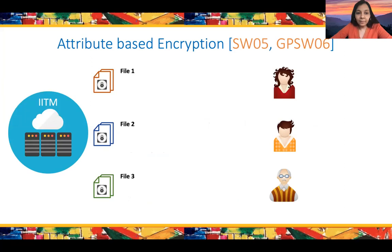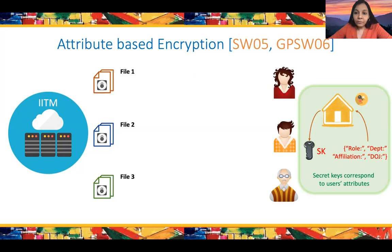Let's see an example. Say you have an organization, an educational institution, with various users and different files. You'd like to associate with each user a secret key corresponding to different attributes: the role they are in, the department they belong to, their affiliation, date of joining, and such things. The files in turn could correspond to access control policies.